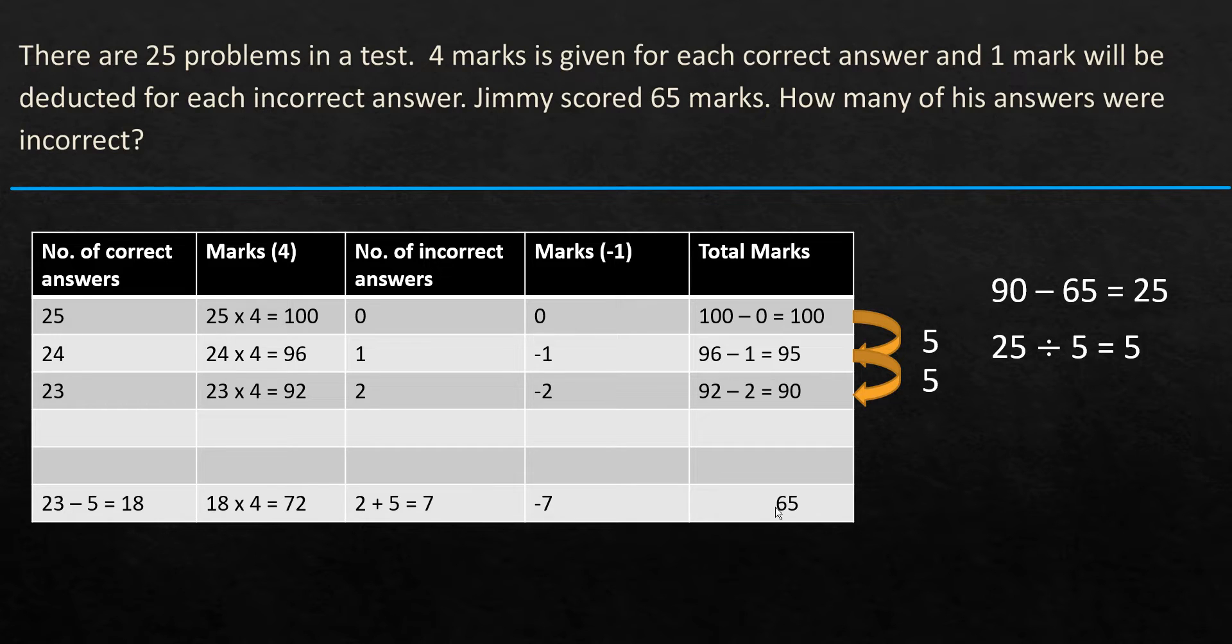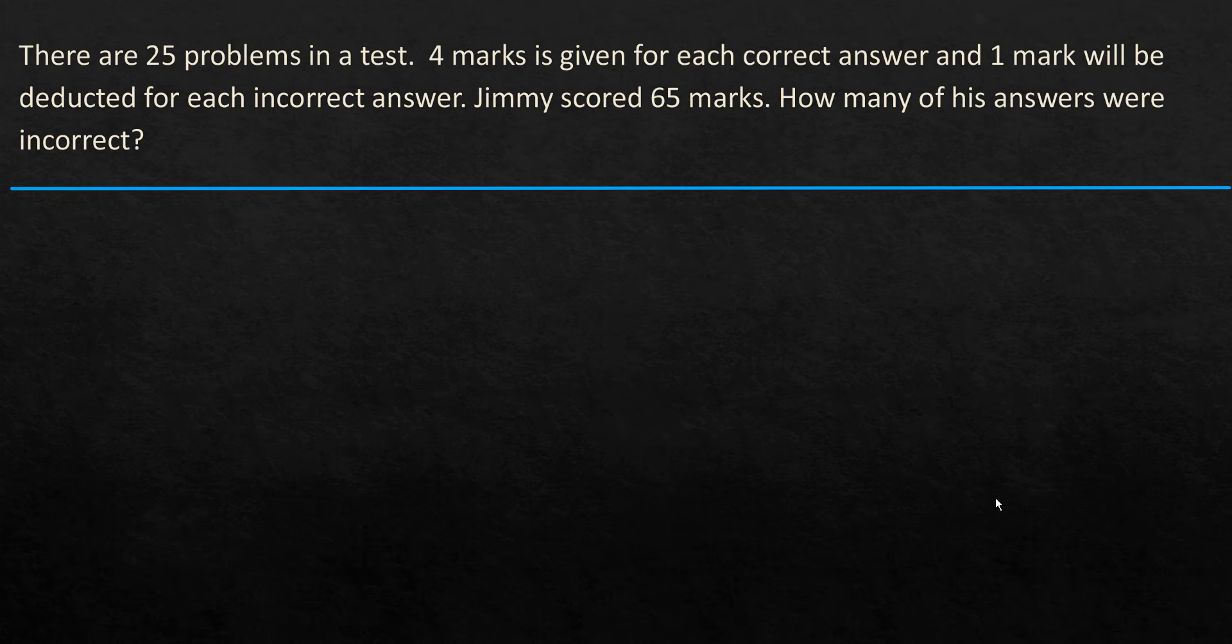So we have found out what is the number of correct answers and number of incorrect answers. So the question here is also about how many of his answers were incorrect. So the number of incorrect answers is 7. That's it by using the trial and error method. We can actually go ahead and see how this can be done in algebra.